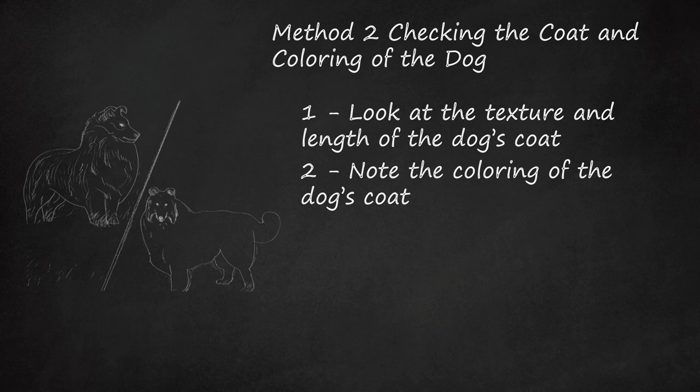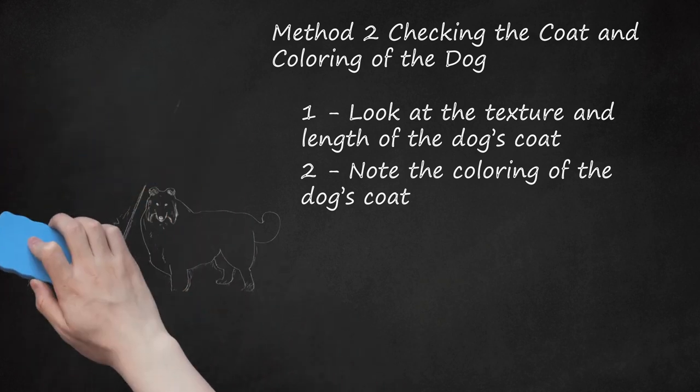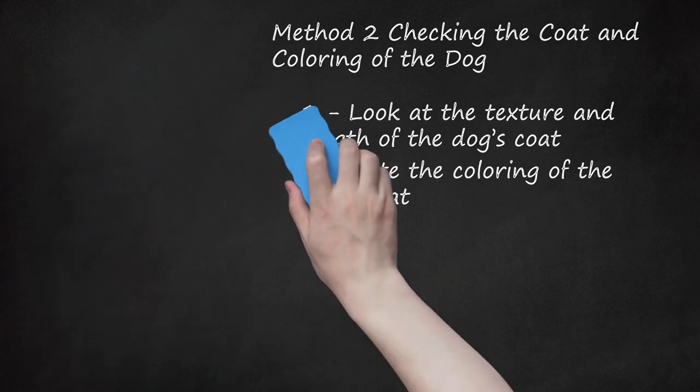The third most common coloring is blue merle, which can range from a pale, silvery blue, to a darker gray, with or without black body spots. The fourth most common coloring is white. A white collie may have a body that is mostly white, with tricolor or blue markings, usually on their head.